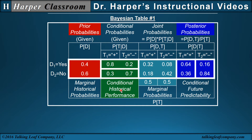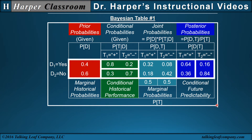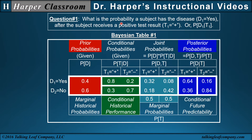This table also contains metrics on historical performance: false negative, sensitivity, false positive, and specificity, as well as the probability of test results. Question one: what is the probability a subject has a disease after receiving a positive test result? Before the test, the prior probability is 0.4. After a positive test, the posterior probability increases to 0.64. With a negative test result, the probability of having the disease decreases and the probability of not having the disease increases.